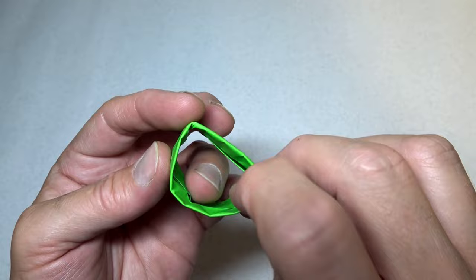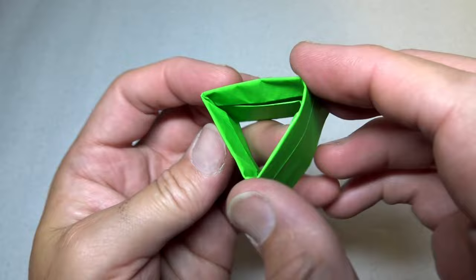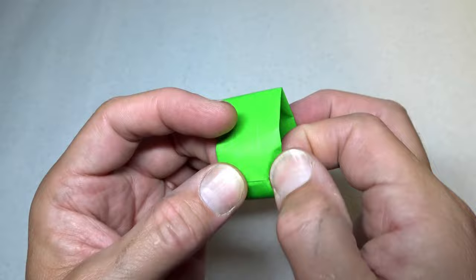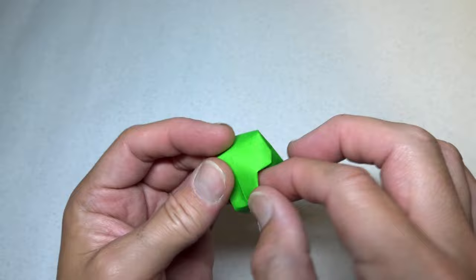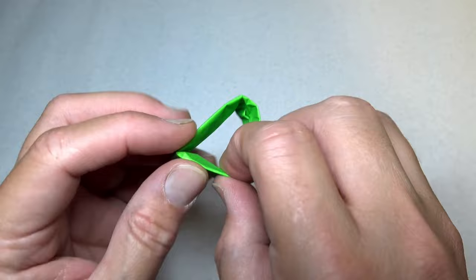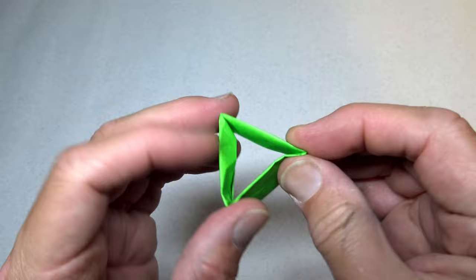So it's like that. And repeat on this side. And form it into the triangle again by pressing on the existing creases. And here we have